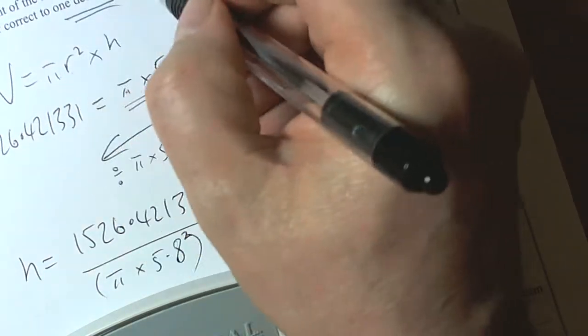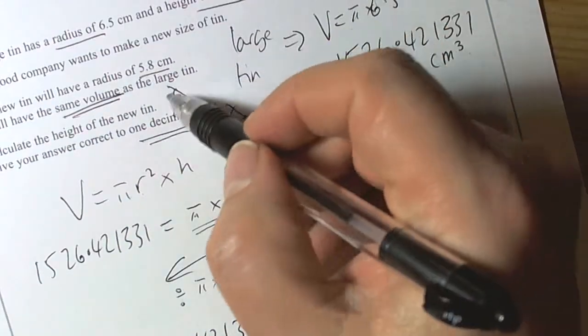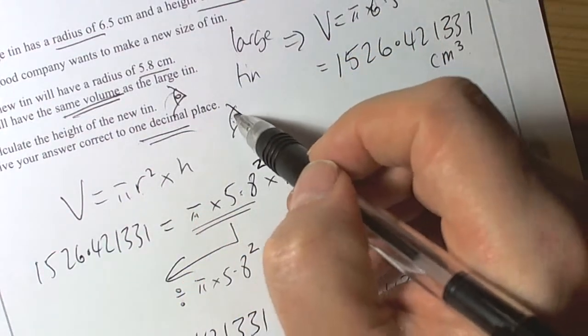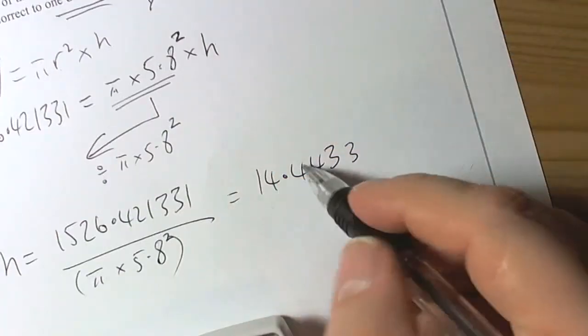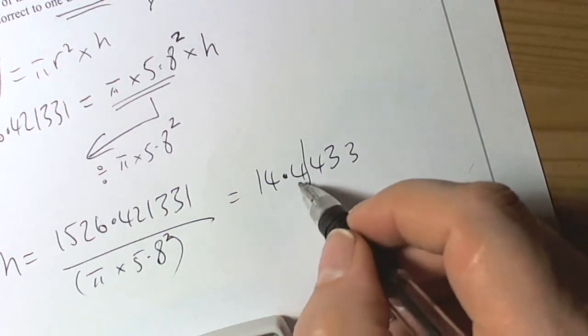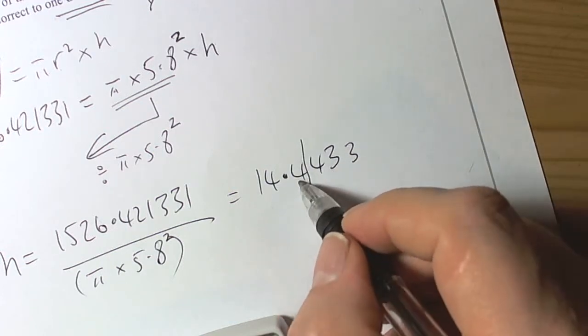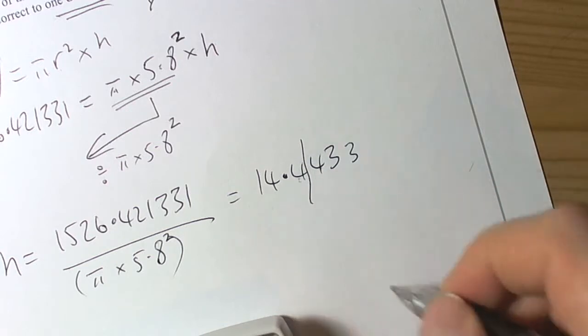And we recognize the question wanted one decimal place. So one decimal place means one digit after the decimal point. The 4 there does not change the 4 there, it's not 5 or more. So the final answer here will be 14.4 centimeters.